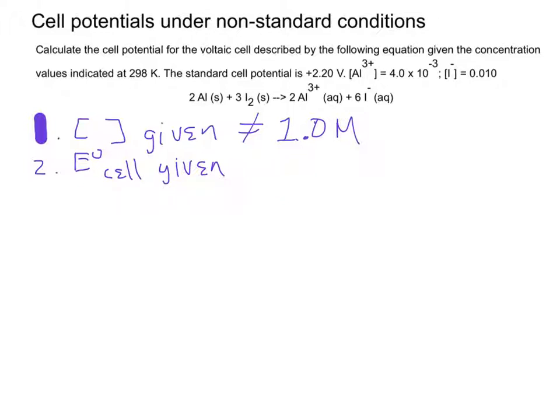looking for the current cell potential. So, both of those items together tell you that you need to use the Nernst equation.